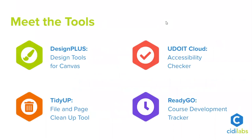Our tool set today consists of four tools: three of which came from Utah State University and one developed by the University of Central Florida. The tools from Utah State include Design Plus, Tidy Up, and ReadyGo. The tool from University of Central Florida is their Udoit Accessibility Checker.